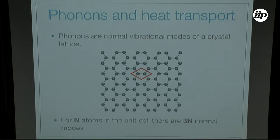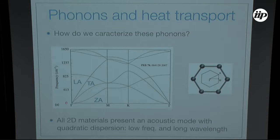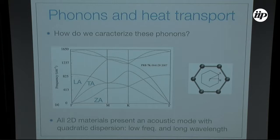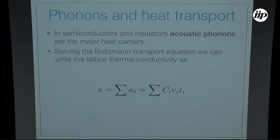Let me say two words about phonons and heat transport. Phonons are vibrational modes in a crystal lattice. In the case of graphene, the unit cell has two atoms, and you can reproduce everything with translations from this unit cell. When you have N atoms in the unit cell, there are 3N normal modes. So in graphene you have three acoustic modes and three optical modes. What makes graphene really special is this out-of-plane mode, which has quadratic dispersion — unlike the longitudinal and transverse modes which have linear dispersion.